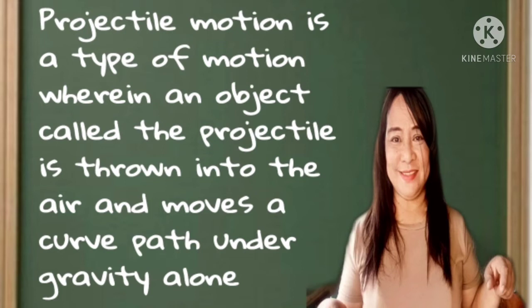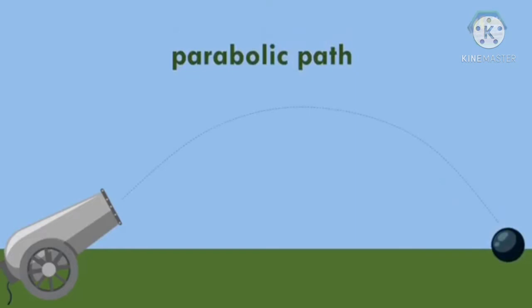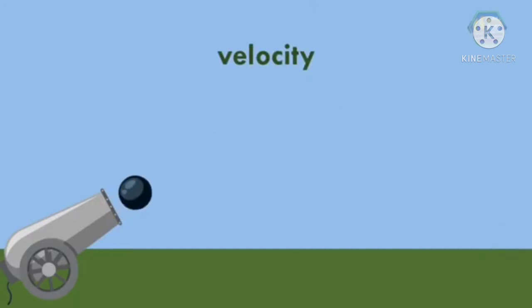For further understanding, you must watch this video. The cannonball follows a parabolic path during its flight before it reaches the ground. We will try to understand the movement of a cannonball. First, its velocity. Initially, the cannonball has initial velocity.